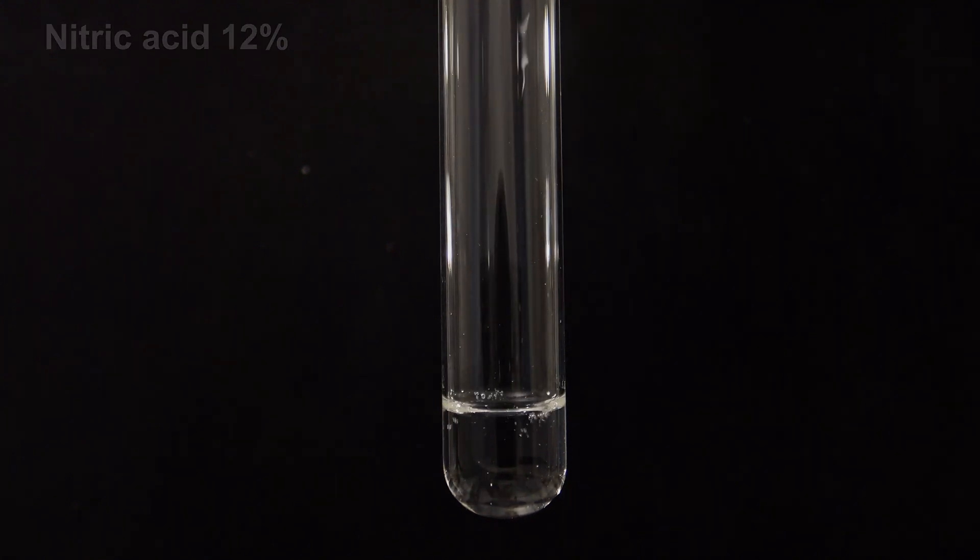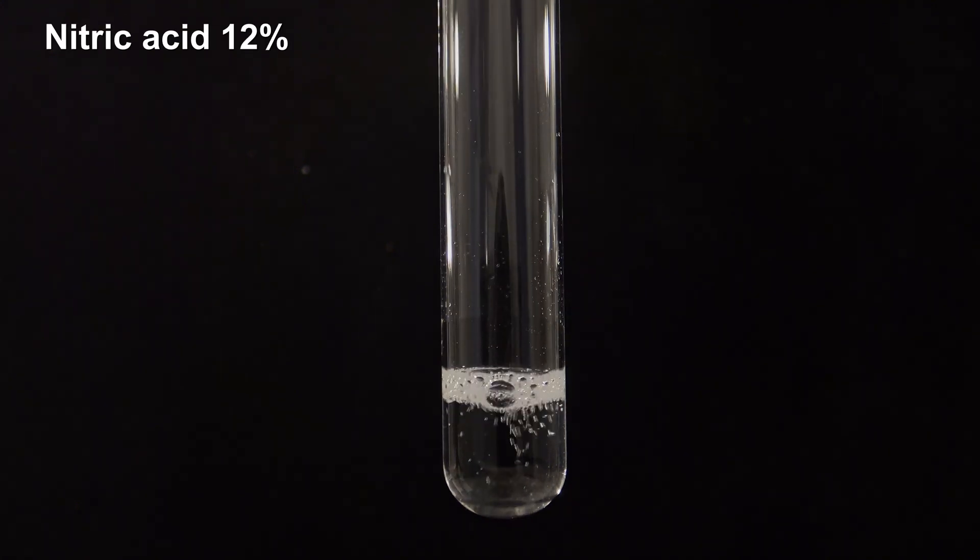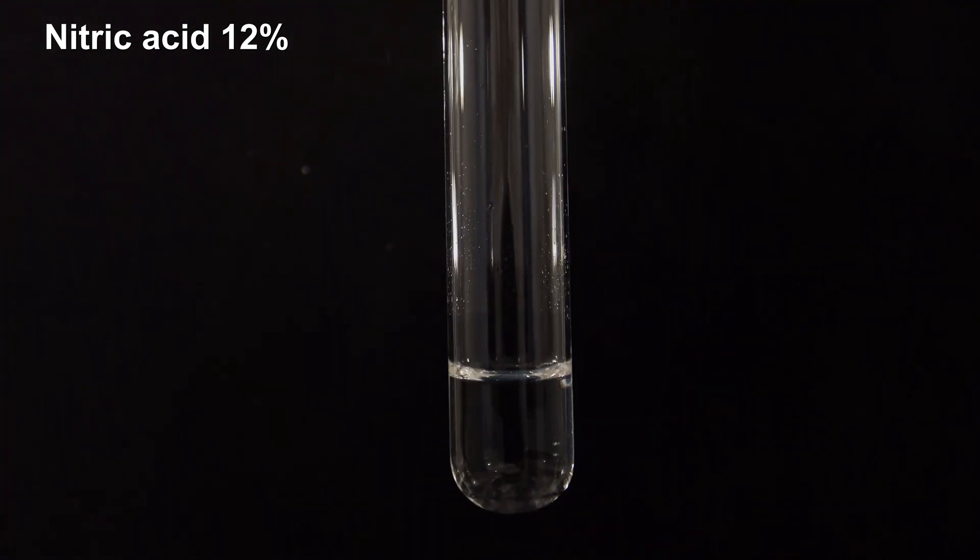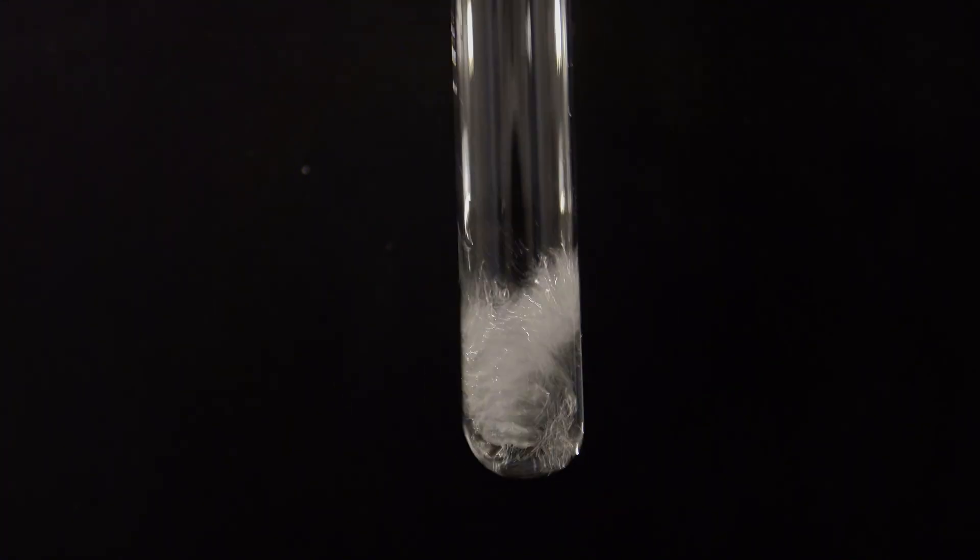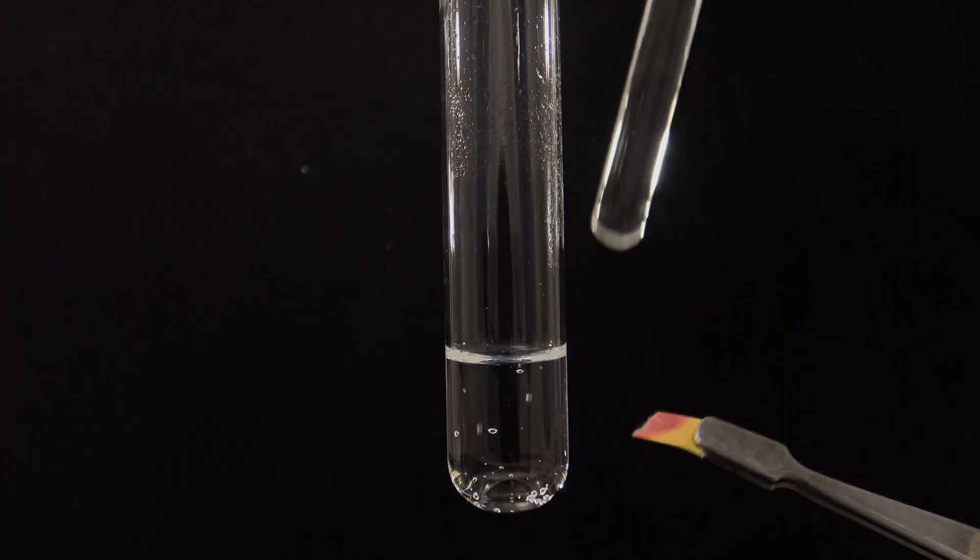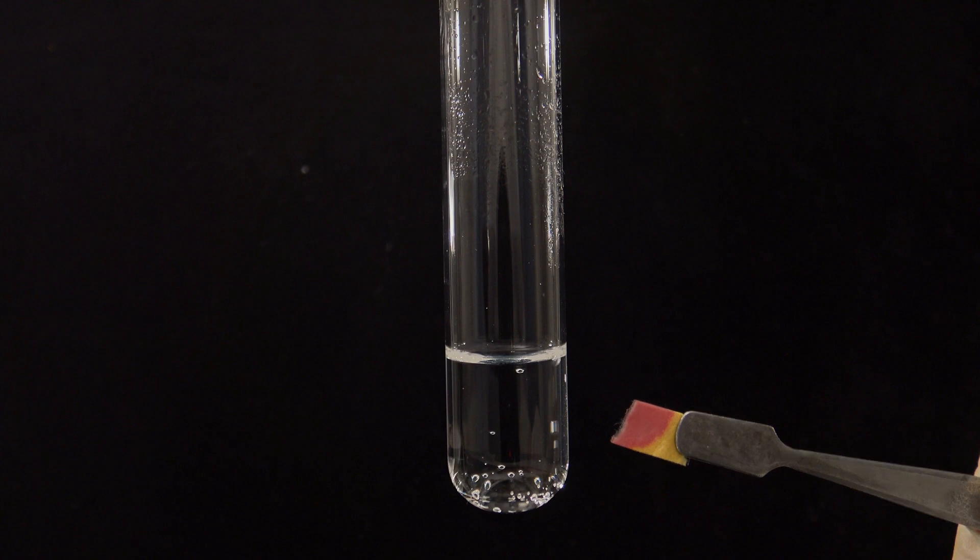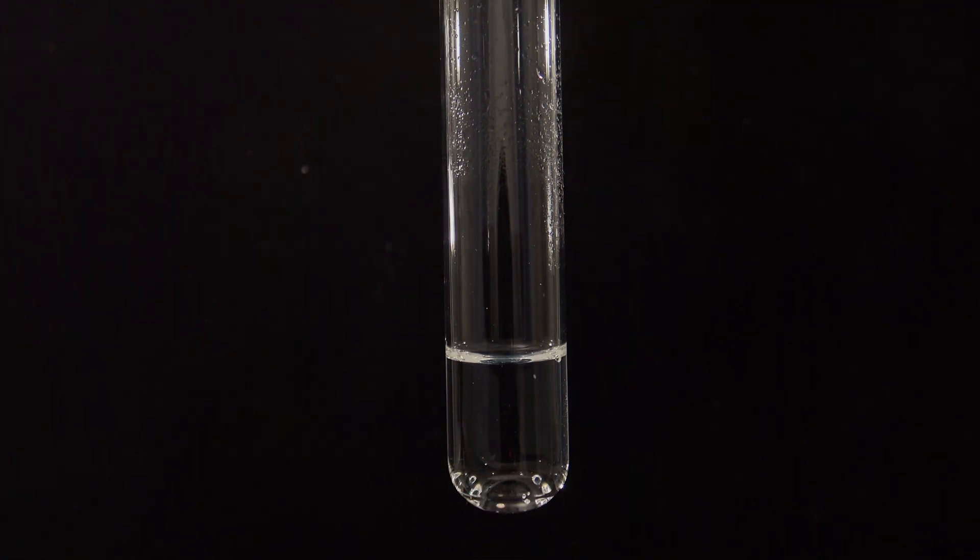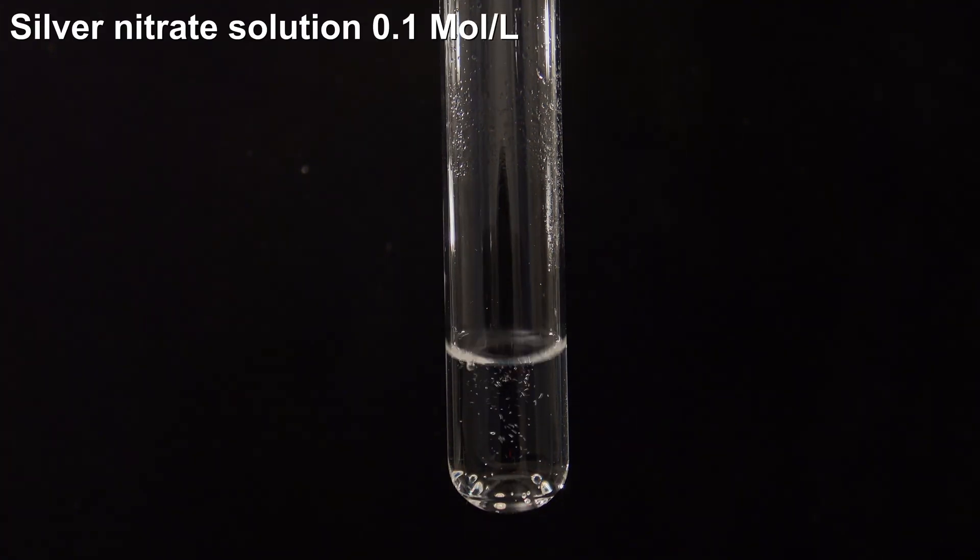For the first test, a sample of the soda extract was acidified with diluted nitric acid that had a concentration of 12%. Next, a 0.1 molar solution of silver nitrate was added.